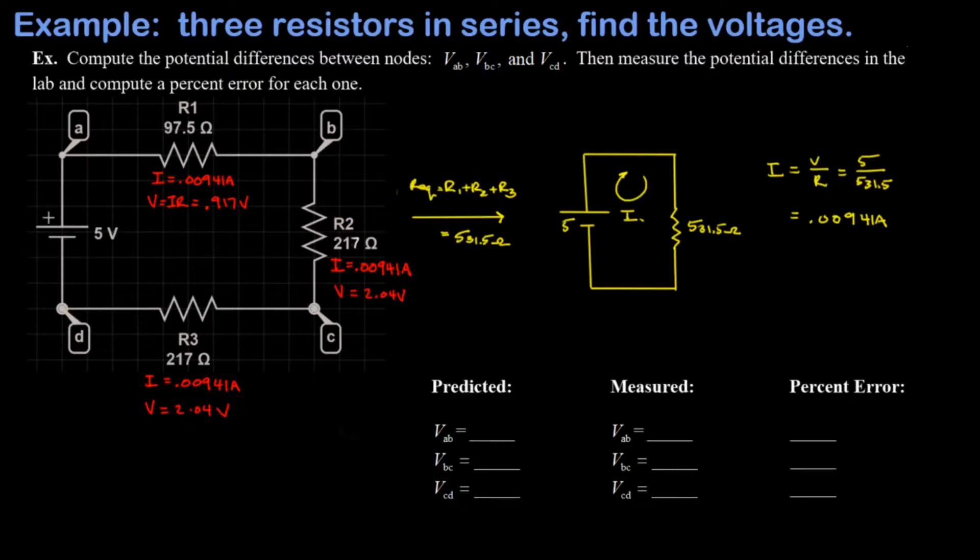Now what we're after in this problem is the potential differences between these different pairs of nodes. So Vab is the potential difference between node A and node B, and I could be formal about this just for a moment and then the rest I'll treat informally.